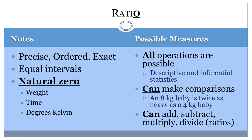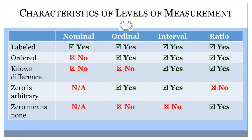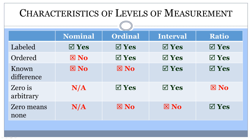Remember that when working with ratio variables, but not interval variables, you can look at the ratio of two measurements. Remembering the basic differences can help you remember the levels of measurement: nominal is named, ordinal is ordered, interval has a known interval or difference, ratio has a true zero.